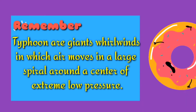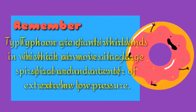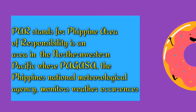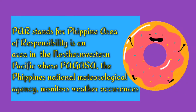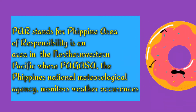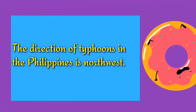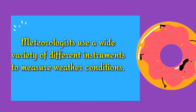Remember: typhoons are giant swirling winds in which air moves in a large spiral around the center of extreme low pressure. PAR stands for Philippine Area of Responsibility — an area in the northwestern Pacific where PAGASA, the Philippine national meteorological agency, monitors weather occurrences. The direction of typhoons in the Philippines is northwest. Meteorologists use a wide variety of instruments to measure weather conditions.